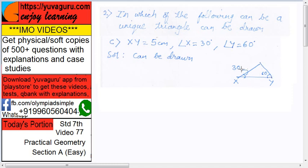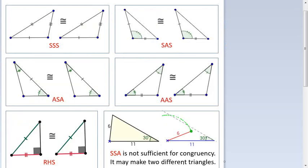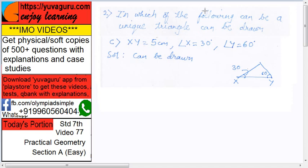This is called the ASA test. The tests which were used in the earlier chapter, properties of triangle, for testing congruence - the same tests can be used for constructing the triangle. Any triangle can be constructed uniquely if you have these three items: SSS, SAS and ASA, AAS and RHS. If you have these five items for any triangle, then only one triangle can be created. It will be unique, so a unique triangle can be drawn.